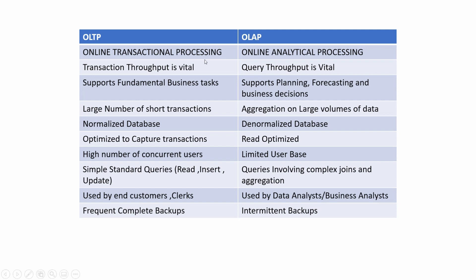Let's do a quick recap. OLTP stands for Online Transactional Processing while OLAP stands for Online Analytical Processing. Transaction throughput is vital for OLTP systems because thousands of users are using the system in parallel and you do not want anyone to wait. For OLAP systems, query throughput is vital because you are writing complex queries and you don't want them to take too much time.